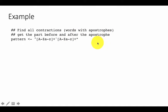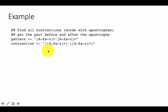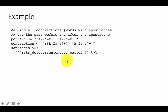Any word which has an apostrophe in it, like 'they're', is a contraction: T-H-E-Y apostrophe R-E. So anywhere there is an apostrophe in the middle of a word, that is the pattern. We create the regular expression with groupings so that we can catch the groupings. Then we use str_detect on sentences with that pattern — the sentences that contain the pattern — using the pipe and square brackets to extract only those particular sentences that match.